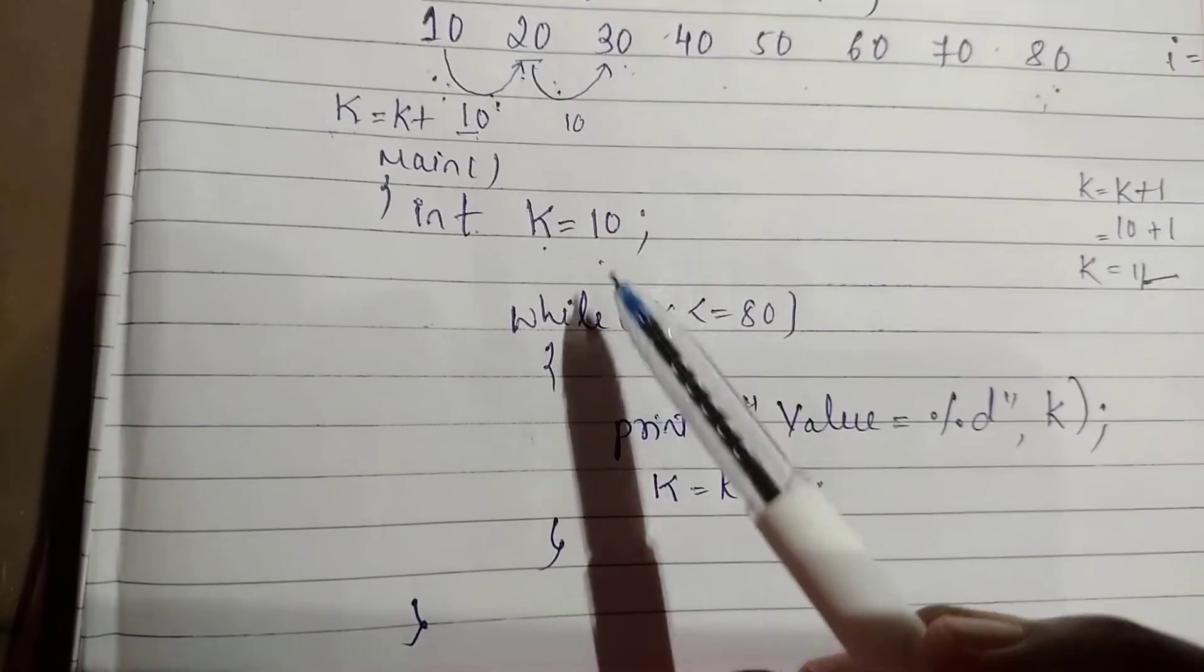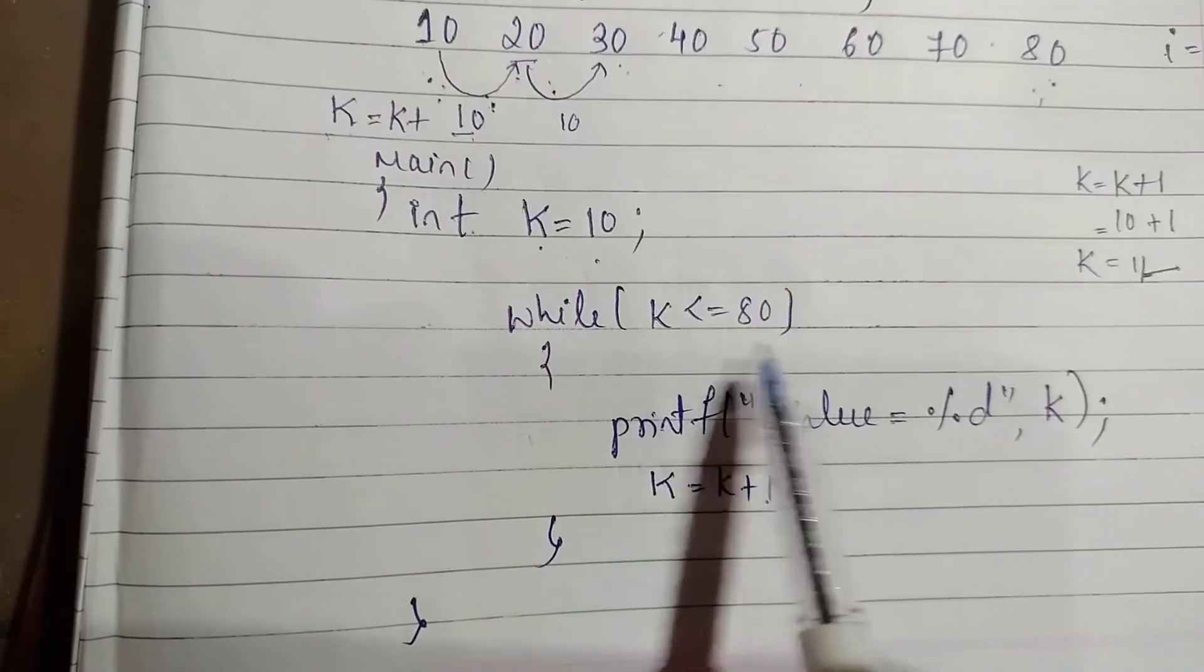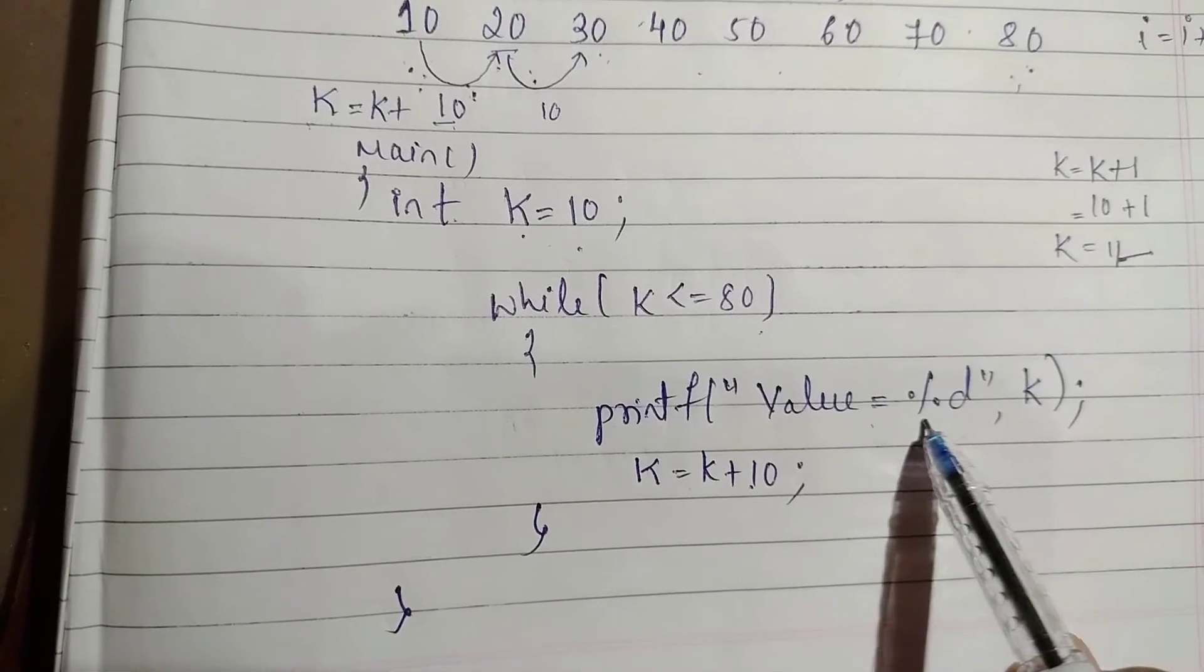When I write this program, it is int K = 10, while K <= 80. I have to print that value using %D